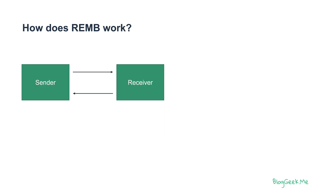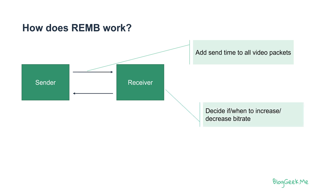How does REMB work exactly? In this case, the receiver is going to make that decision. The sender will be sending out the timestamp on all the video packets, so we're going to know the time at which these were sent. Based on the differences of these times as they are received, the receiver can decide if or when to increase or decrease the bitrate. Since the receiver is not the one sending, it's going to send back to the sender the estimated bitrate that it has seen on the network.